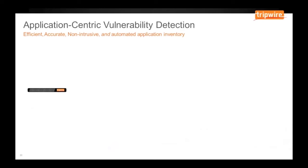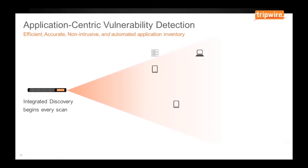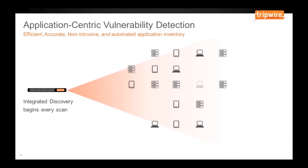When a scan is initiated, it always begins with a discovery of the target address space. Tripwire IP360 identifies which IP addresses are active in that space and then systematically profiles the composition of those assets.